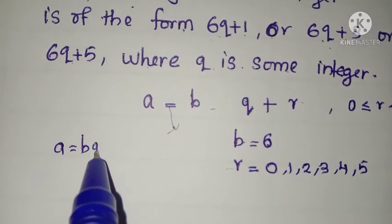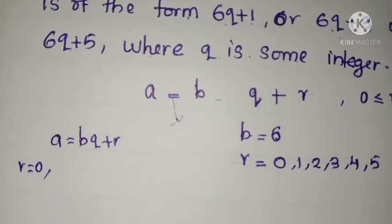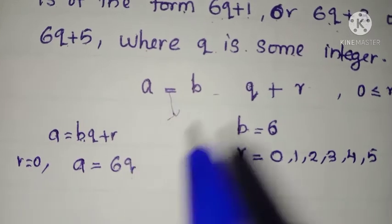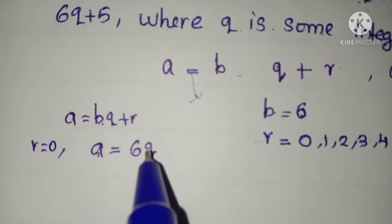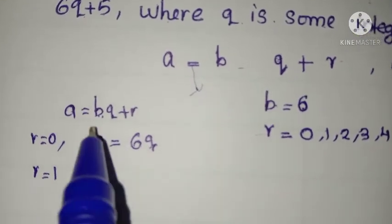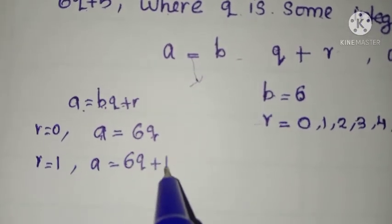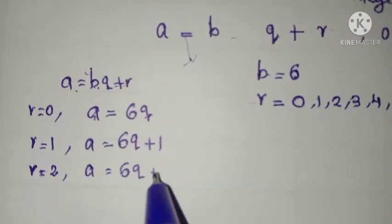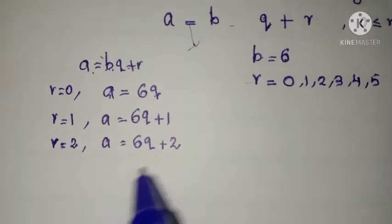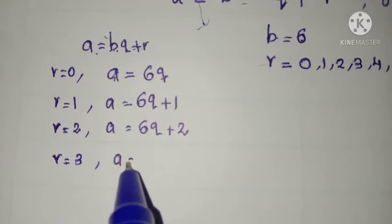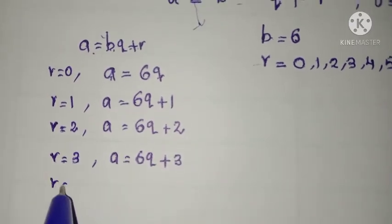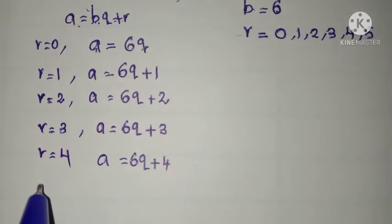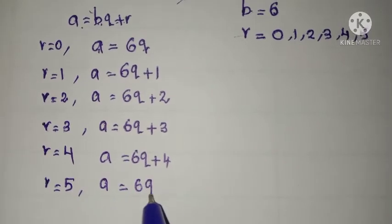In the expression A = Bq + R, put R equal to 0. When R = 0, A is equal to 6q. When R = 1, A is equal to 6q plus 1. When R = 2, put B = 6 and R = 2, so A is 6q plus 2. When R = 3, A is equal to 6q plus 3. When R = 4, A is equal to 6q plus 4. Similarly, when R = 5, A is equal to 6q plus 5.